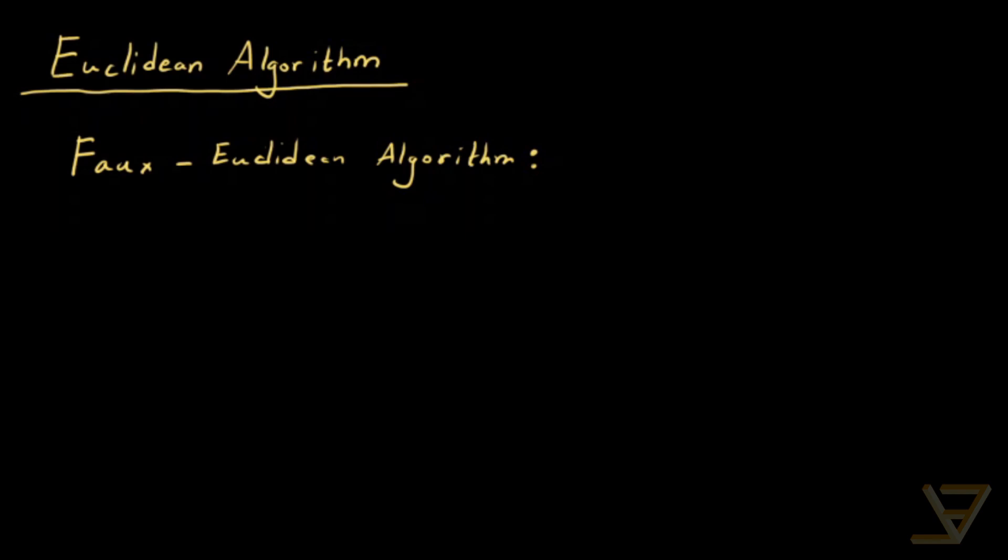The Euclidean algorithm is a method of finding the greatest common divisor of two integers such that at least one of them is non-zero. It's based on a sort of version of the Euclidean algorithm, but a more basic idea,